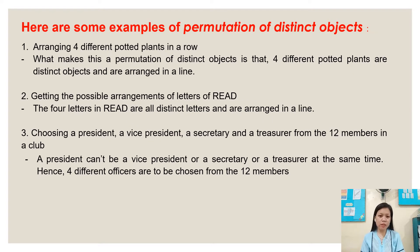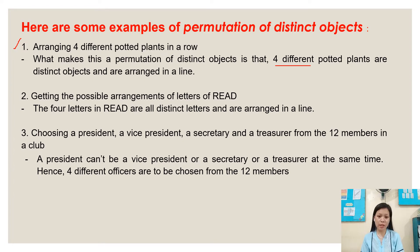Here are some examples of permutation of distinct objects. Number one: arranging four different potted plants in a row. What makes this a permutation of distinct objects is that the four different potted plants are distinct objects and are arranged in a line.